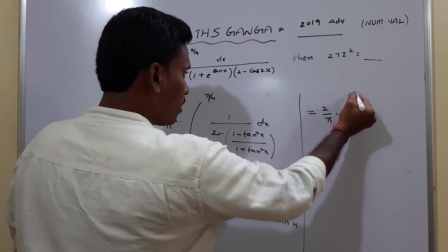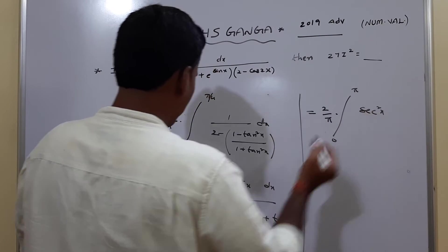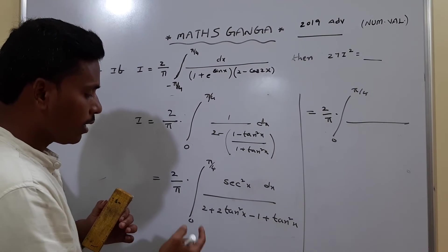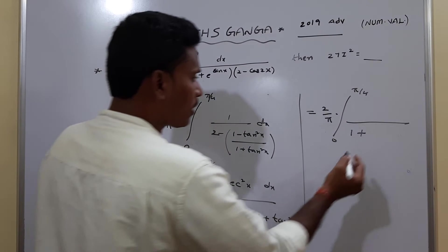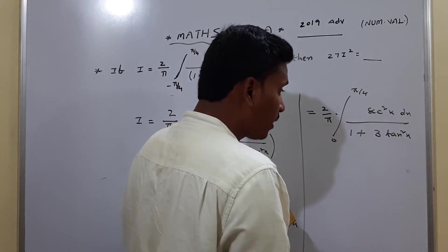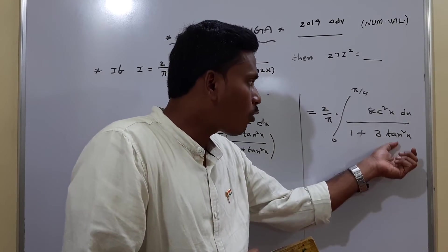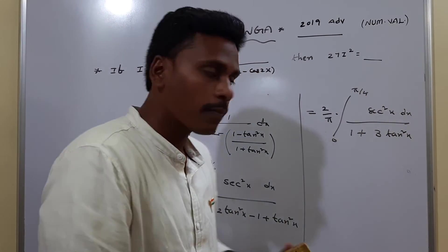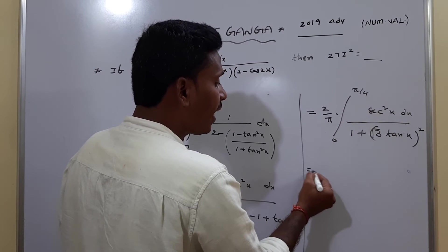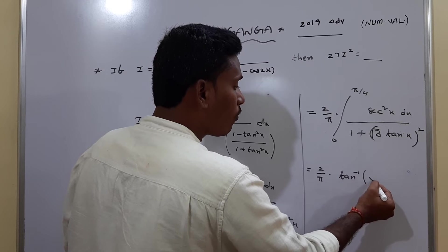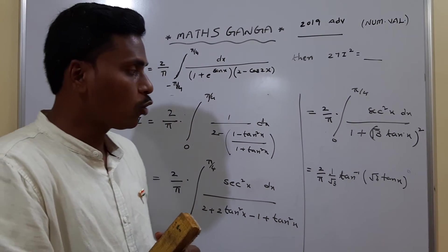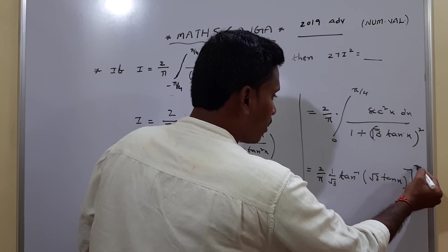This simplifies to 2 by π of the integral from 0 to π/4 of sec²x divided by (1 + 3tan²x) dx. The denominator is 1 plus (√3 tan x)², and since the derivative of tan x is sec²x dx, this integral has the direct form giving tan inverse. So we get 2 by π times 1 by √3 of tan inverse(√3 tan x), evaluated from 0 to π/4.